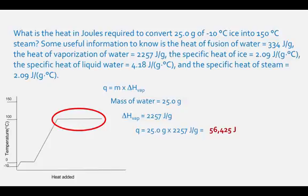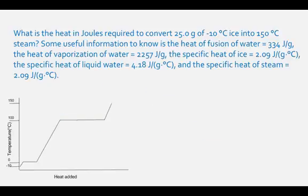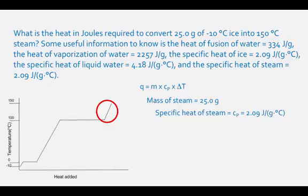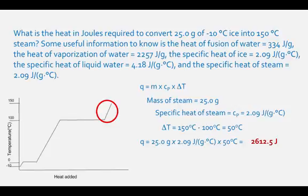The final part of the heating curve is the increase in temperature from 100 degrees to 150 degrees Celsius. The equation is Q equals mcΔT. The mass of the water is 25.0 grams, the specific heat of steam is 2.09 joules per gram degree Celsius, and the change in temperature is 150 minus 100, which equals 50 degrees Celsius. The heat of this transition is 25.0 times 2.09 times 50, which equals 2,612.5 joules.